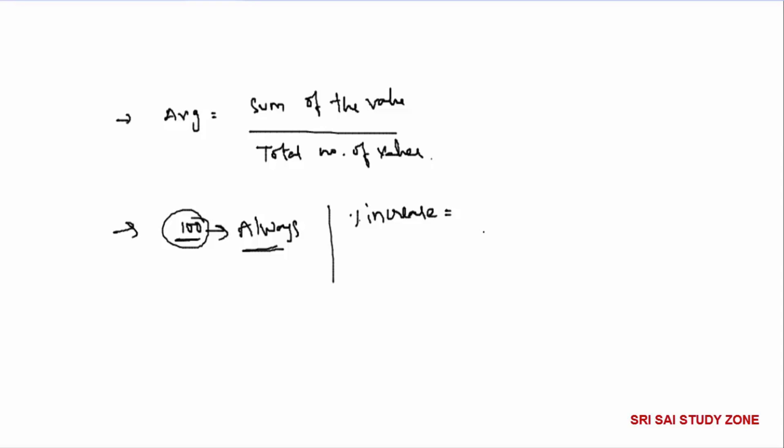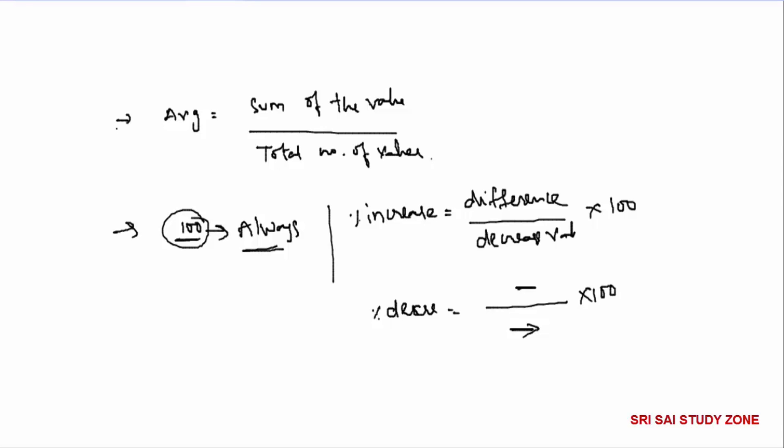Percentage increase equals the difference divided by the original value, into 100. Percentage decrease equals the difference divided by the decrease value, into 100. These are the four key formulas we will discuss.